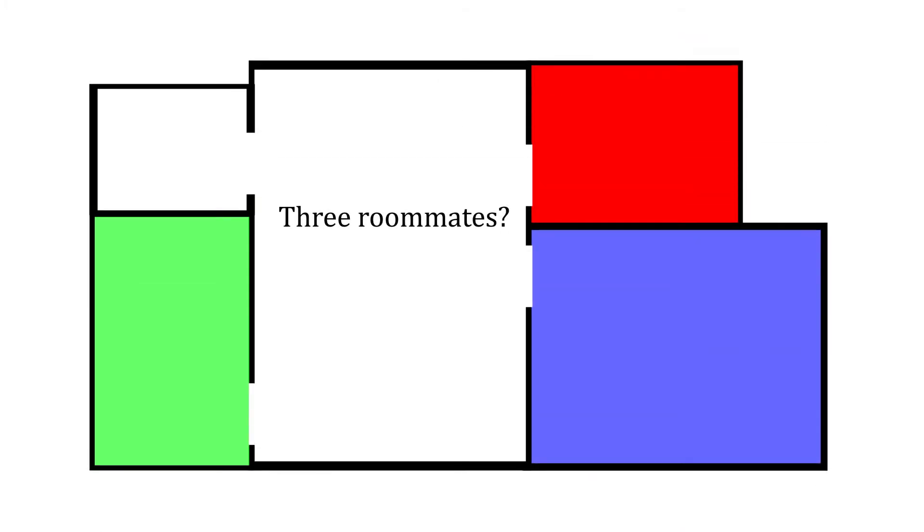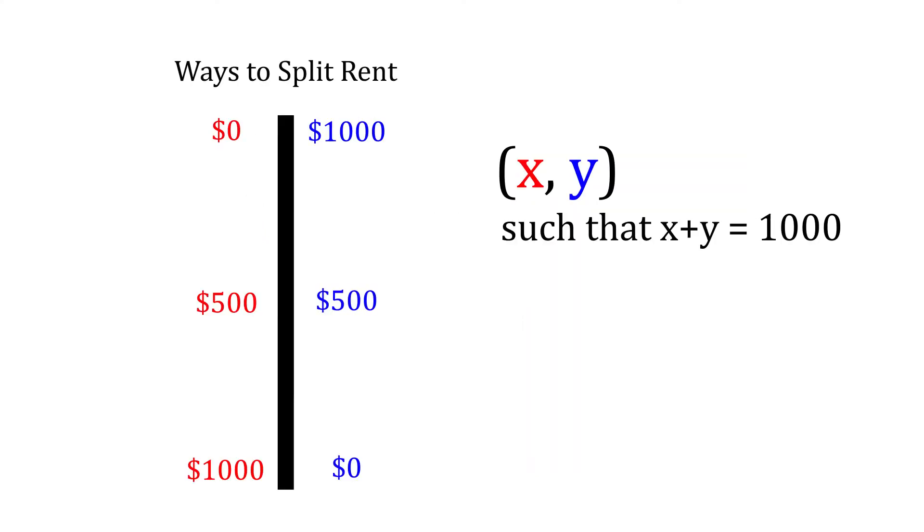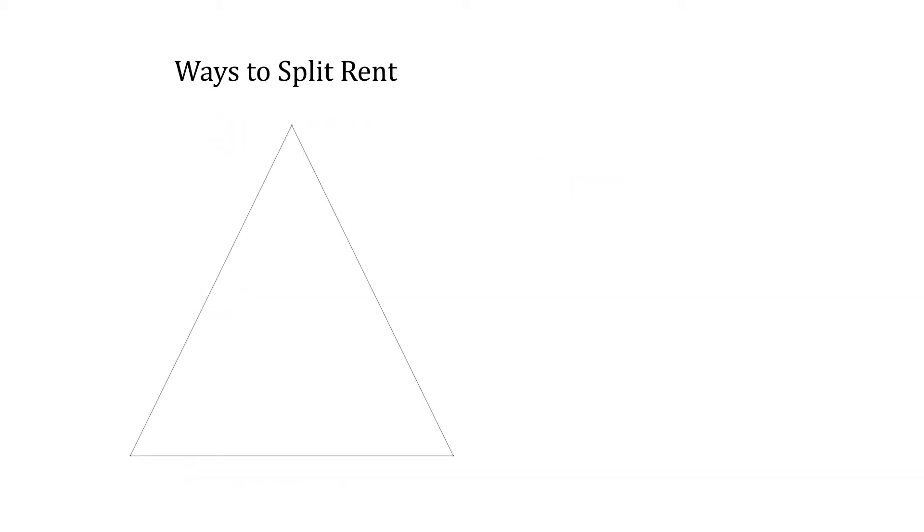How should Joey, Chandler, and Ross fairly split the $1,000 total rent for their three-bedroom apartment given everyone's subjective preferences? We used a line to represent all possible divisions of rent among two rooms. For three rooms, we need a triangle.